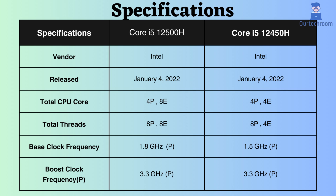Both of these processors were released on January 4, 2022. The Core i5-12500H has 4 performance cores and 8 efficiency cores, while the Core i5-12450H has 4 performance cores and 4 efficiency cores. Additionally, the Core i5-12500H has 8 performance threads and 8 efficiency threads, whereas the Core i5-12450H has 8 performance threads and 4 efficiency threads. Therefore, under normal and heavy CPU loads, the Intel Core i5-12500H may perform better simply based on the number of threads and cores.